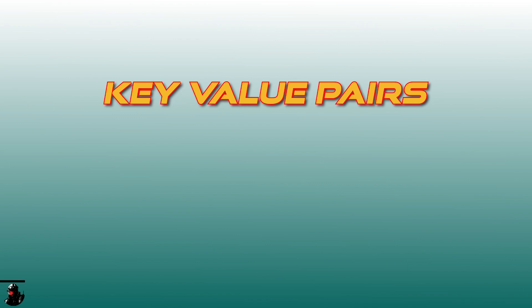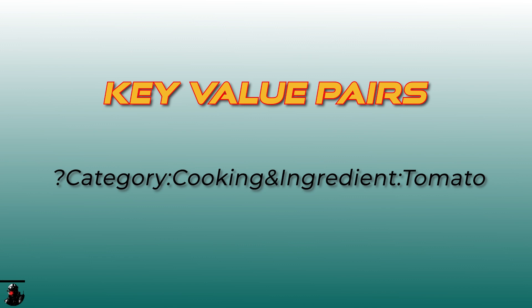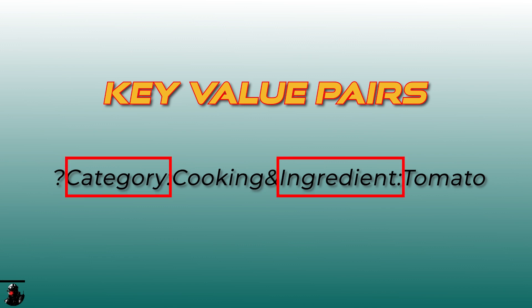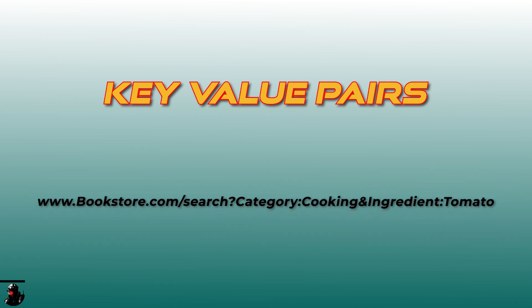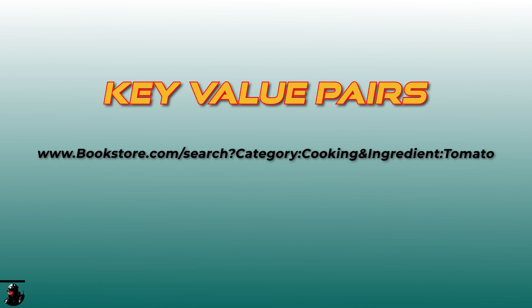This additional information is structured in what we call key-value pairs. In the URL, the first key-value pair follows a question mark, and any subsequent pairs are separated by ampersands. Each pair has a key, which is the name of the parameter, and a value, which is the information requested. For example, in this URL, 'category' and 'ingredients' are keys, while 'cooking' and 'tomato' are their respective values. The server uses these parameters to understand exactly what information you're looking for, much like how you would specify details to the librarian.